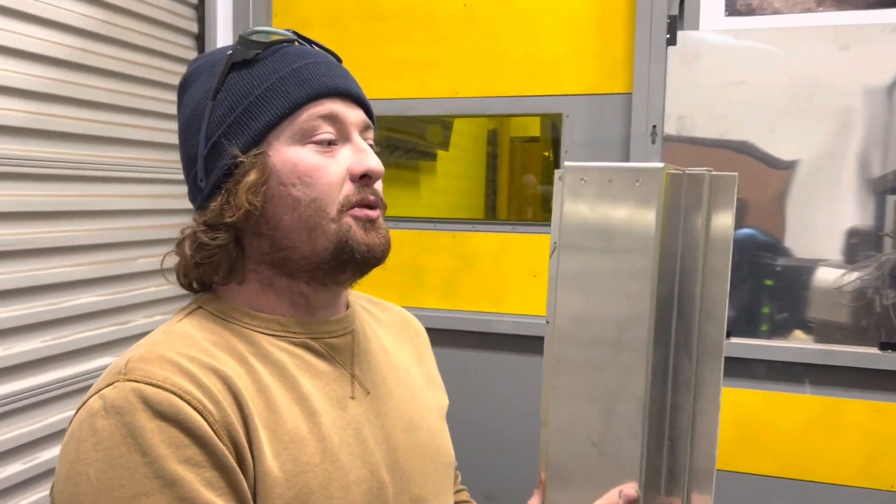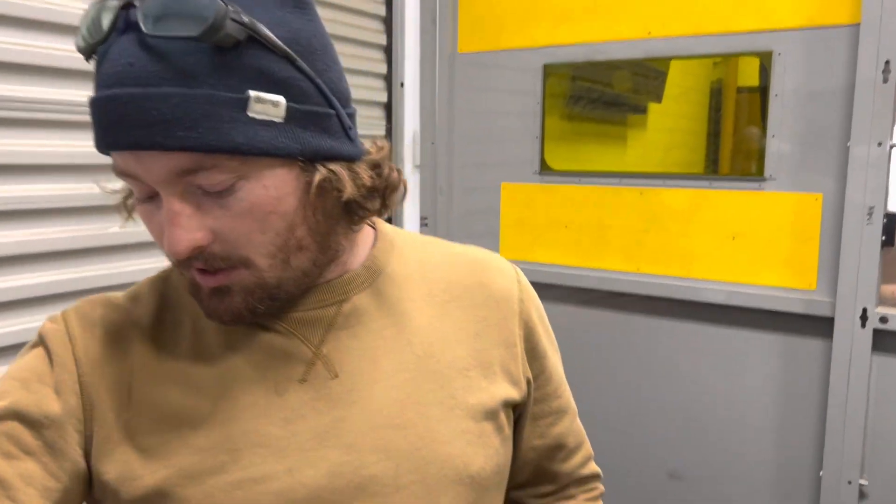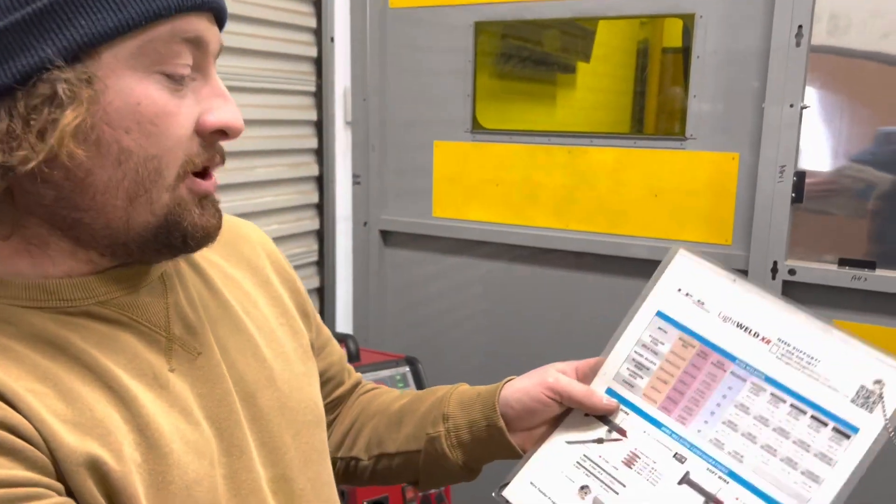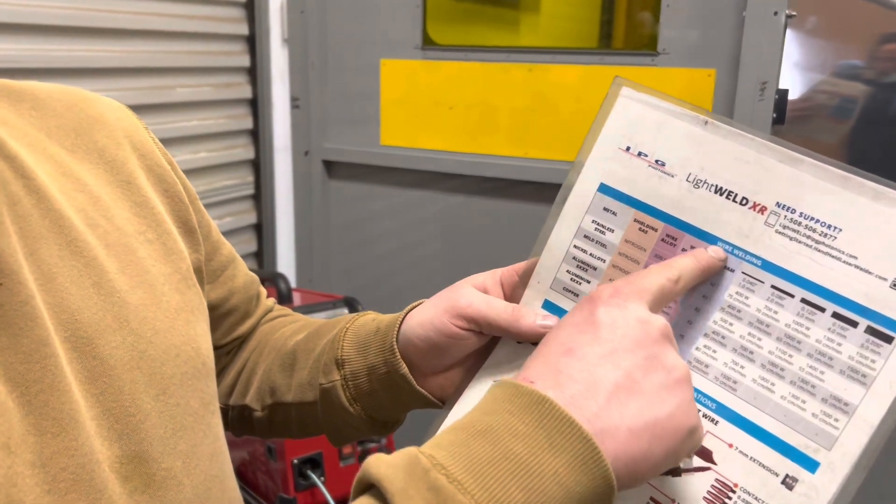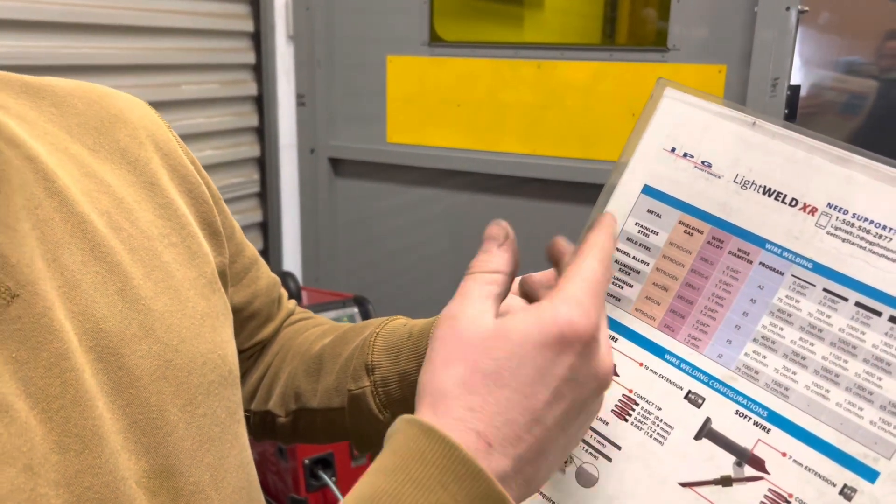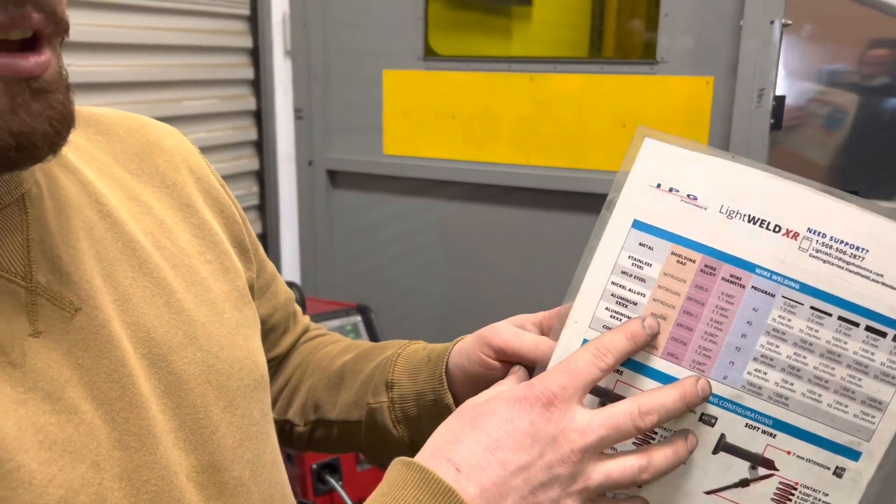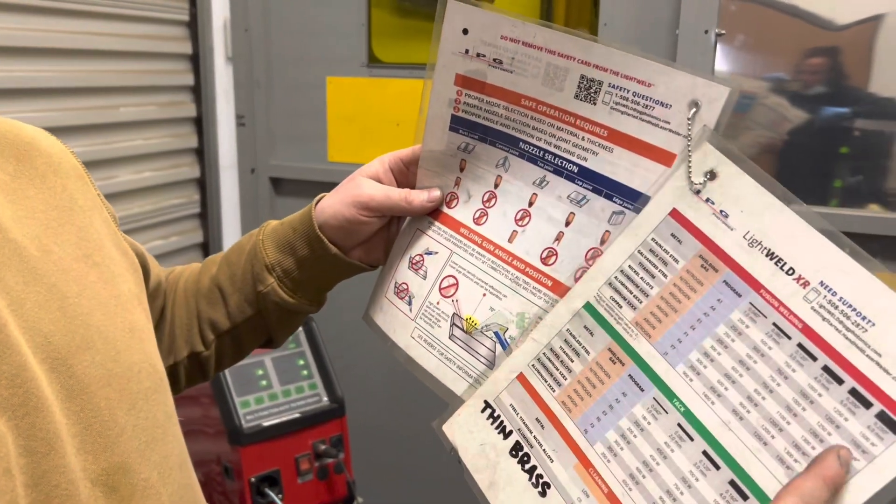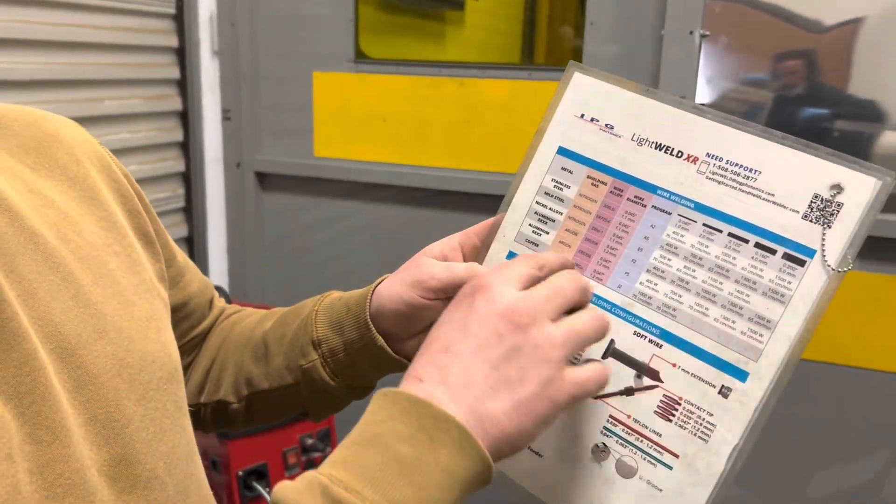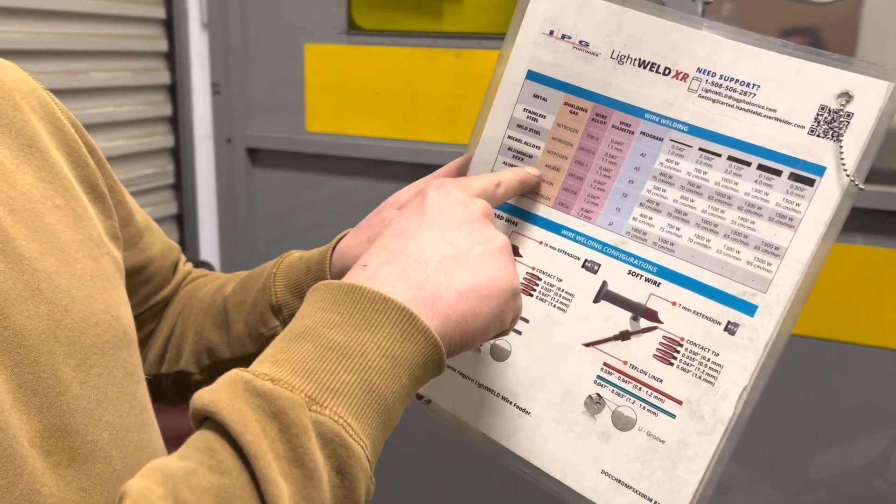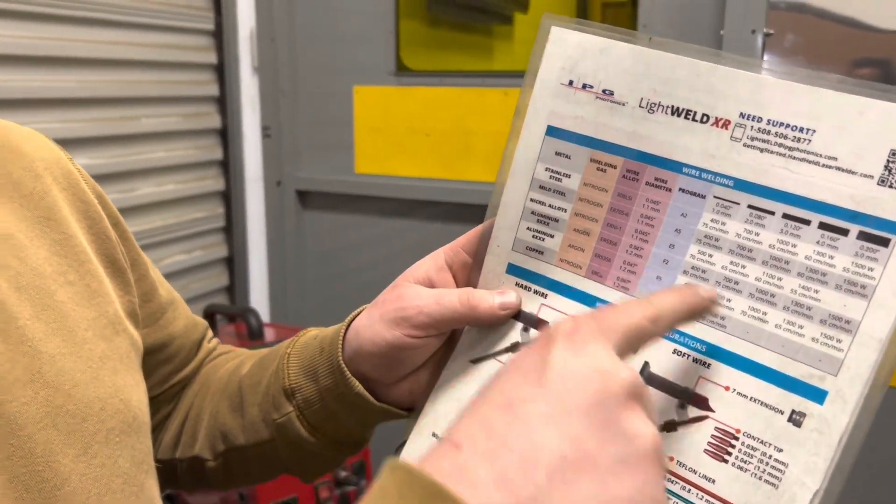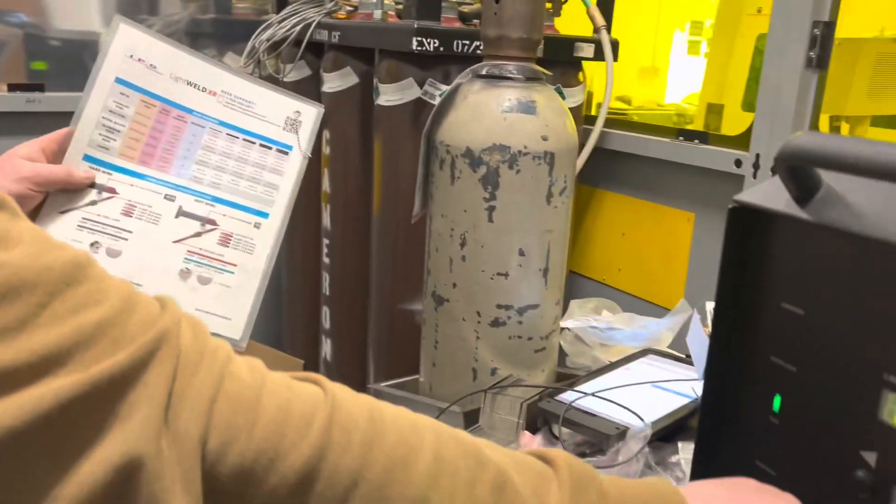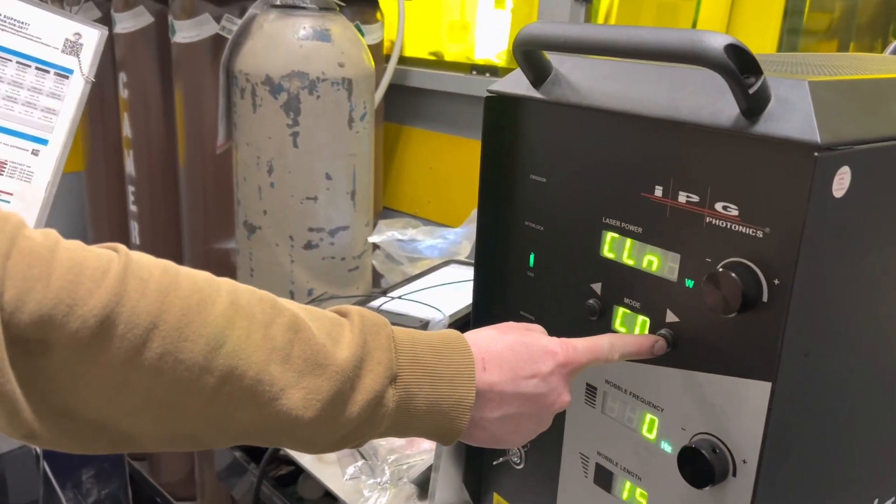So I'm going to get right into showing you the settings I'm going to be using. I'm going to be starting off with this piece here, which appears to be a little thicker than 16 gauge aluminum. What I'm going to do is look at my chart here. I am going to use a filler wire. I tend to try to use the filler wire whenever I can, but I do have the option to use fusion welding. So I'm assuming it's a 5000 series aluminum. I will choose my first setting to be F2.